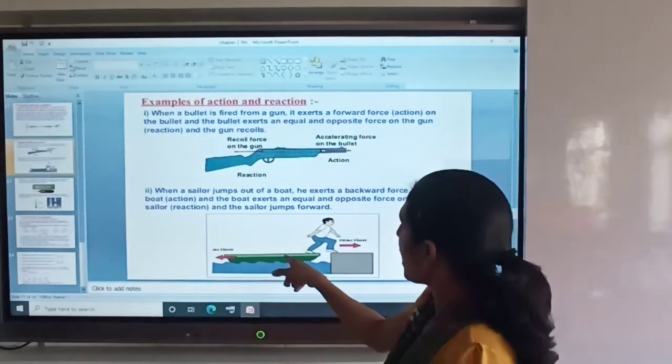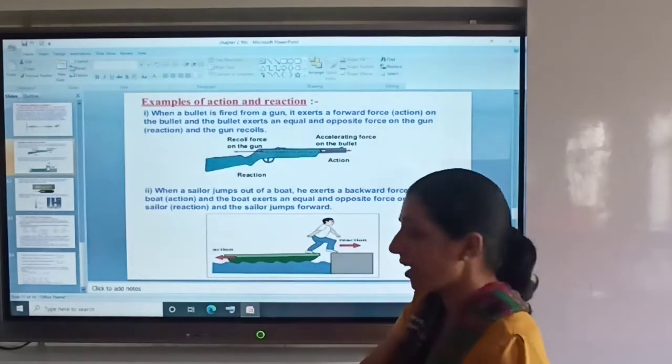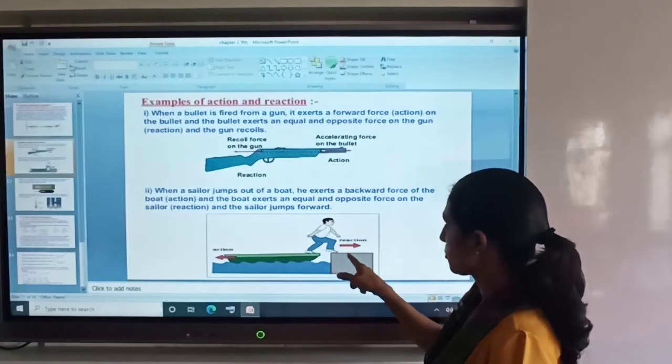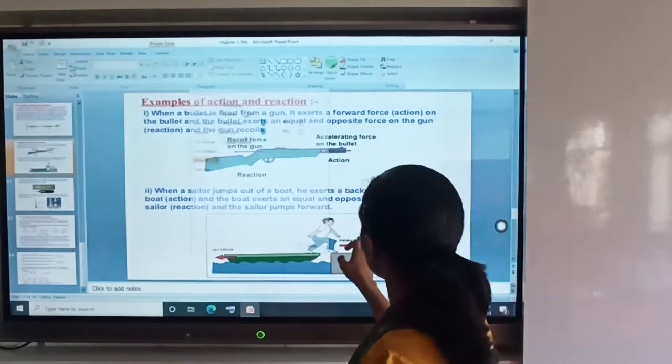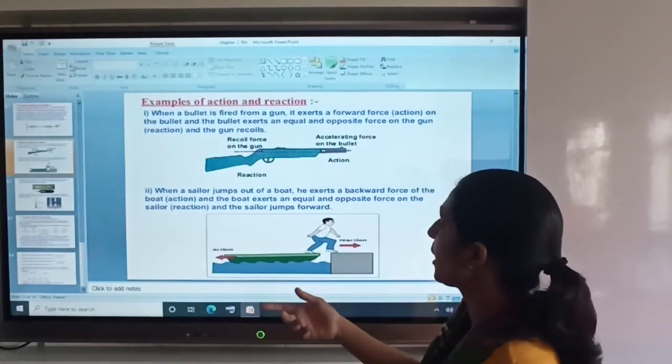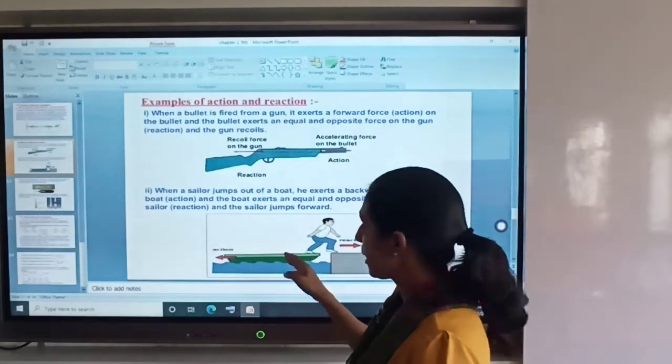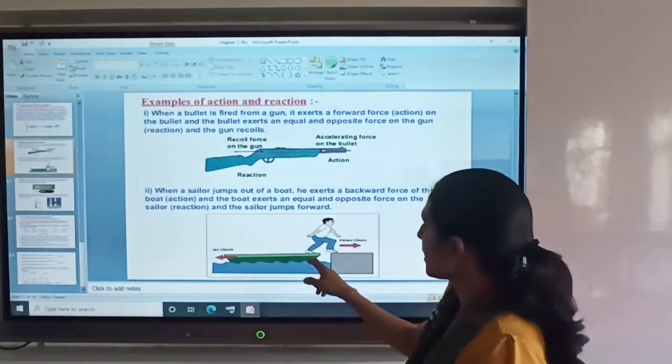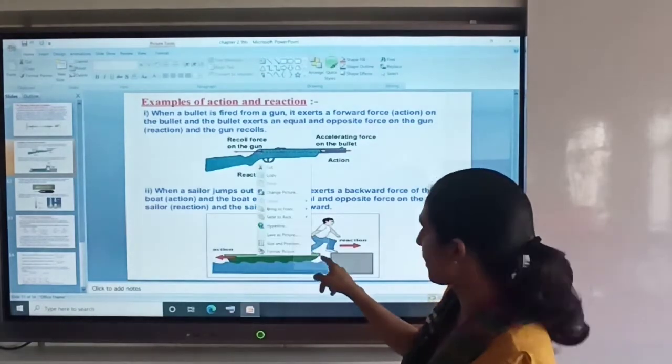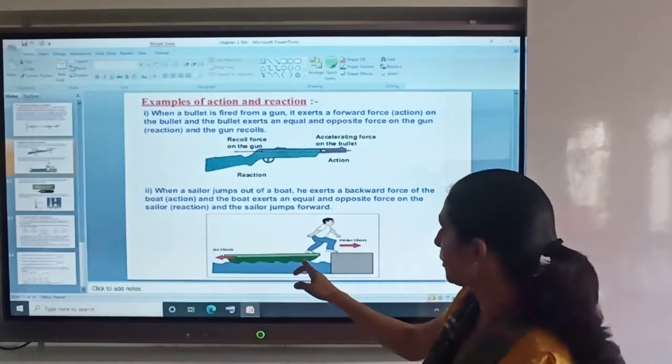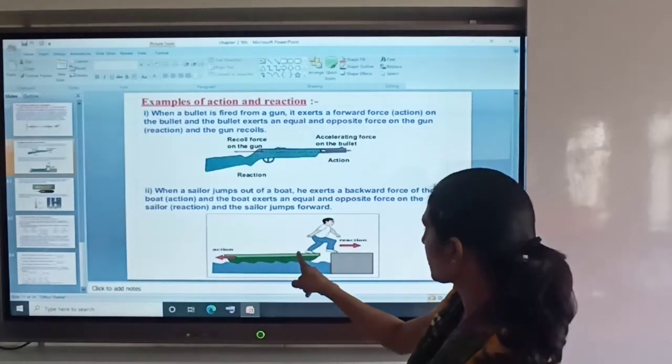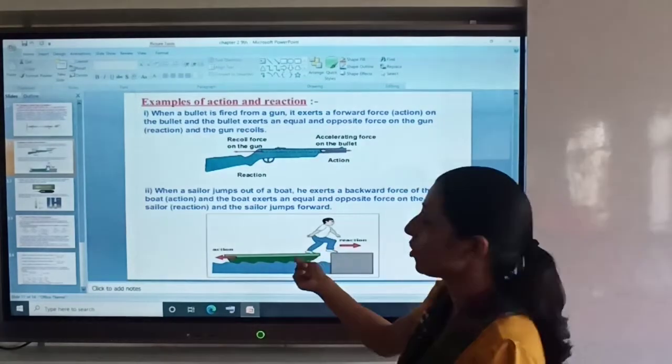Second is, if we are in a boat and jump to the shore, we push the boat backward. When we jump from the boat to the shore, the boat moves backward.